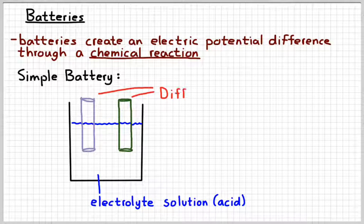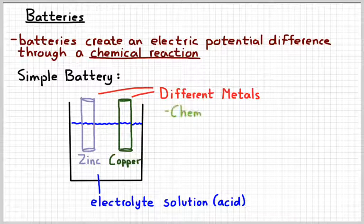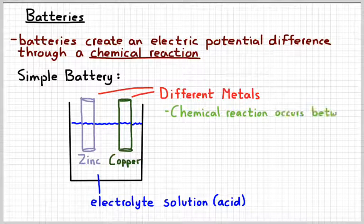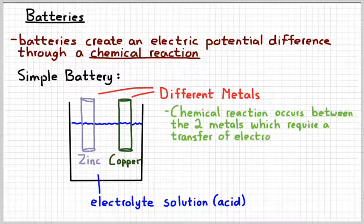And then in that solution you put two different metals. For example, you might use zinc and copper. Now when you put zinc and copper together and you allow them to react, electrons will move from the zinc to the copper. And so there's a chemical reaction that involves a transfer of electrons. That's what oxidation-reduction reactions are all about.